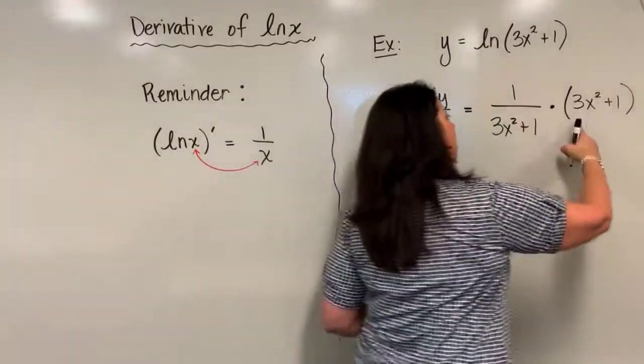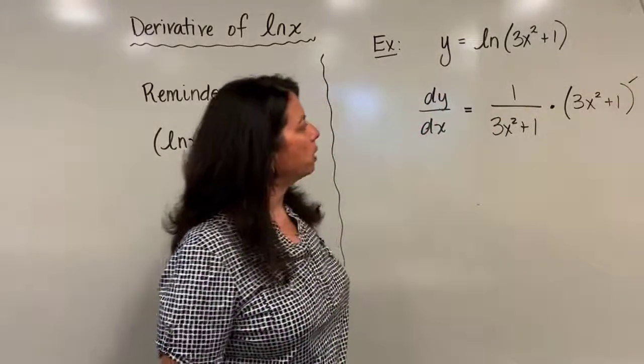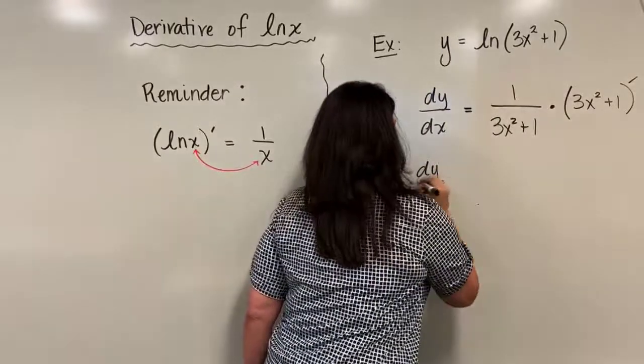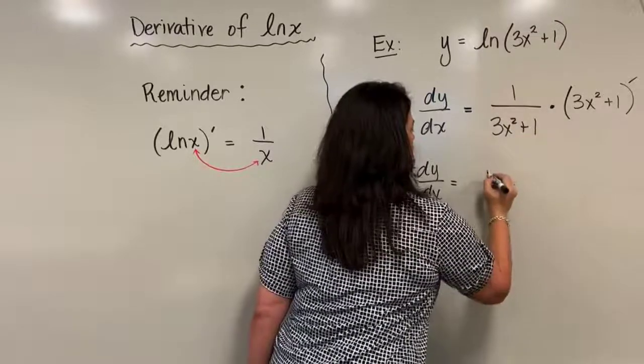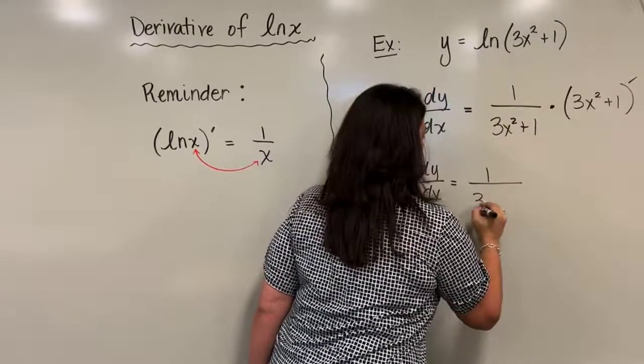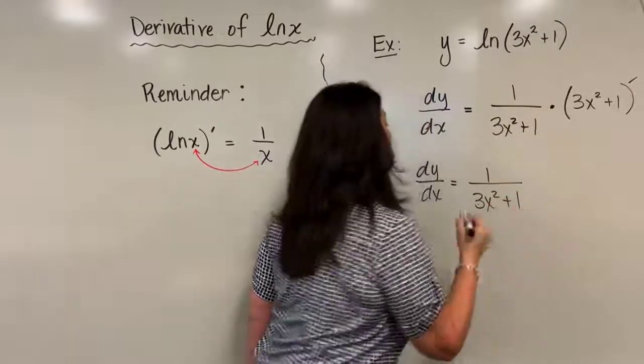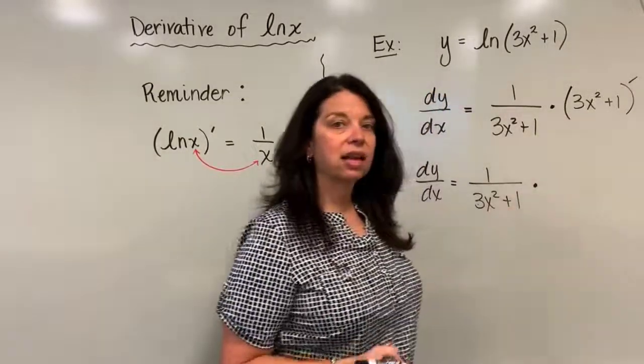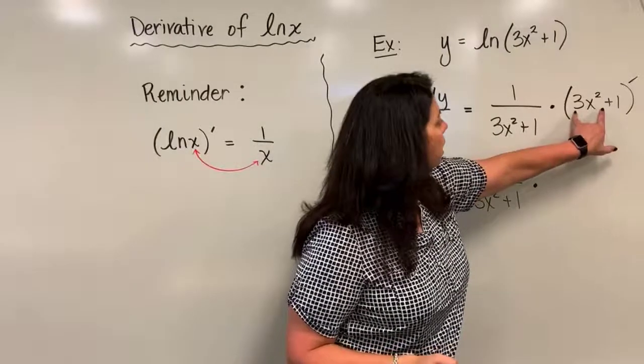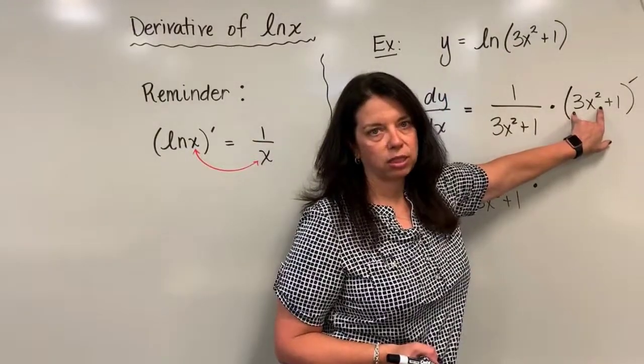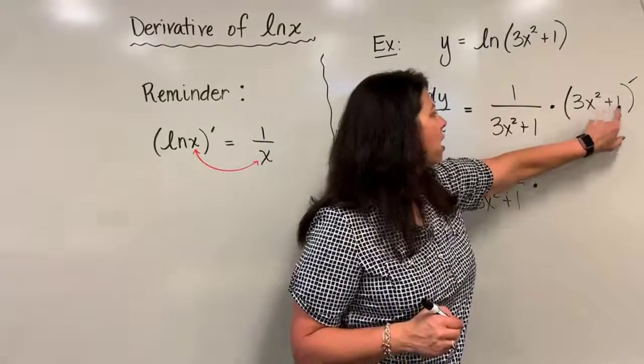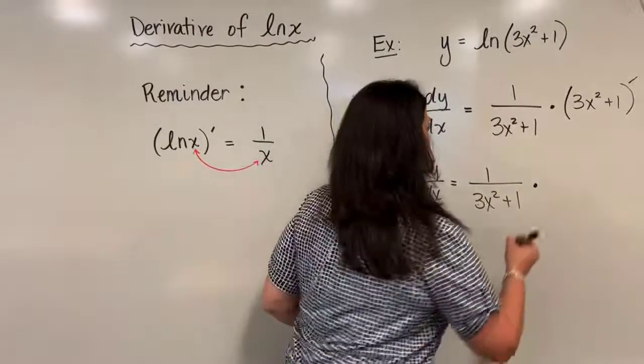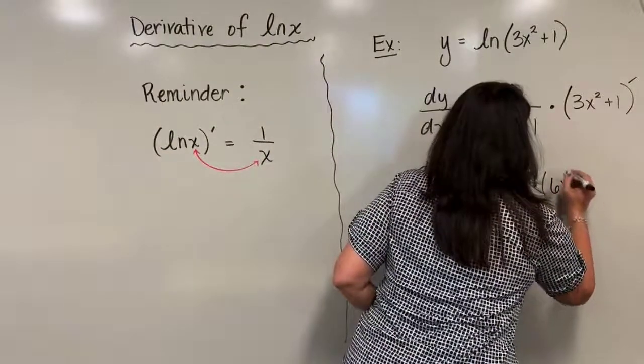So now I have that inside function, 3x squared plus 1, and I need to find its derivative in our next step. So we have dy/dx is equal to—I'm going to go ahead and keep this first fraction as is, 1 over 3x squared plus 1—and I will multiply that now by the derivative of that inside function. The derivative here for this first term in the inside function is simply 6x, and the derivative of just that constant is 0. So for this whole derivative here, you're simply going to get just 6x back out.